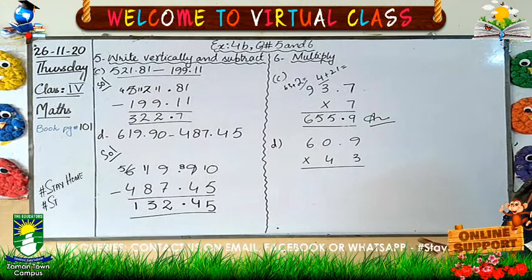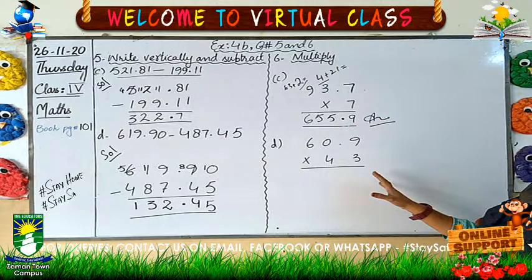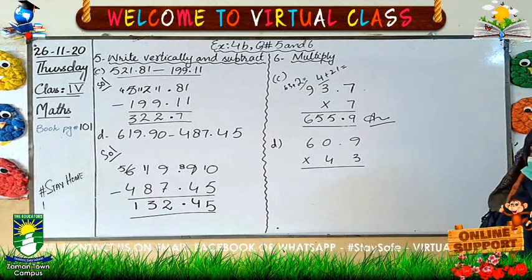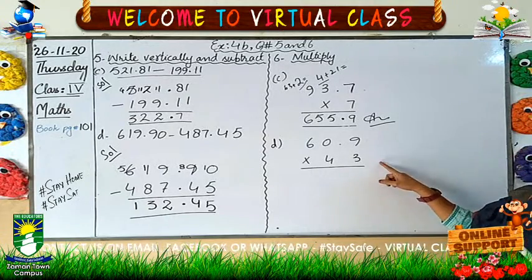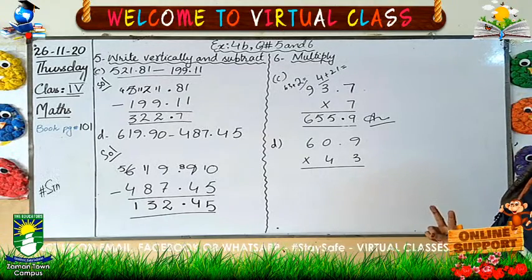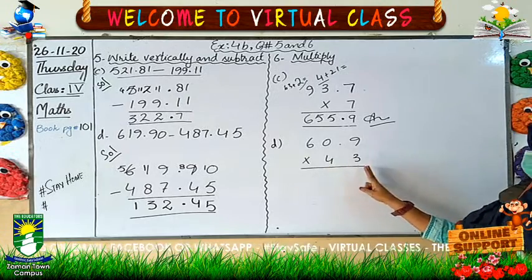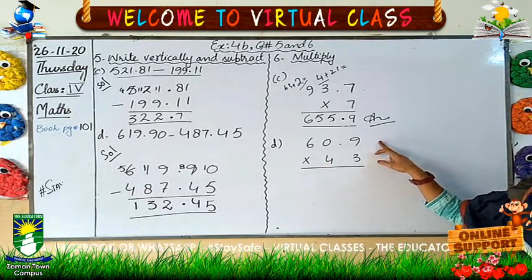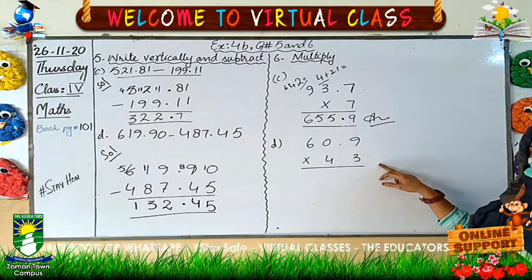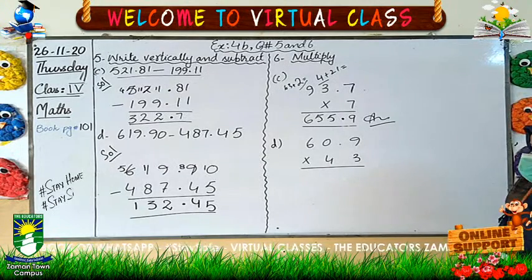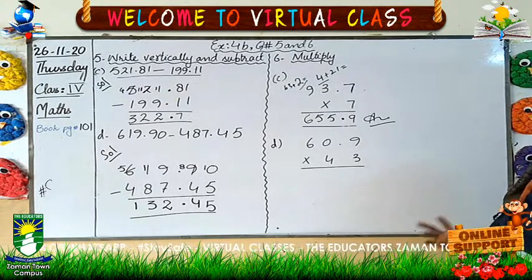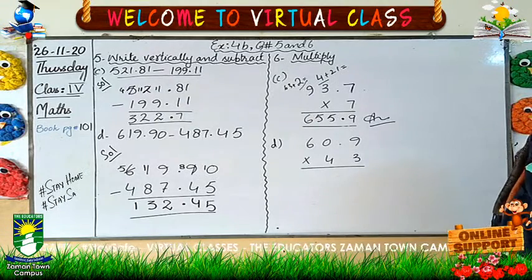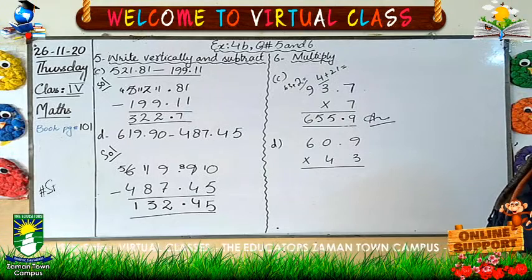Now I have the next question and here I have something different. Yes, here I have a 2-digit multiplier. Okay, I have to multiply with 2 multiplier digits. That is my multiplicand and that is my multiplier. That is very easy, I think, because we have a very simple table here. Well, let us start.